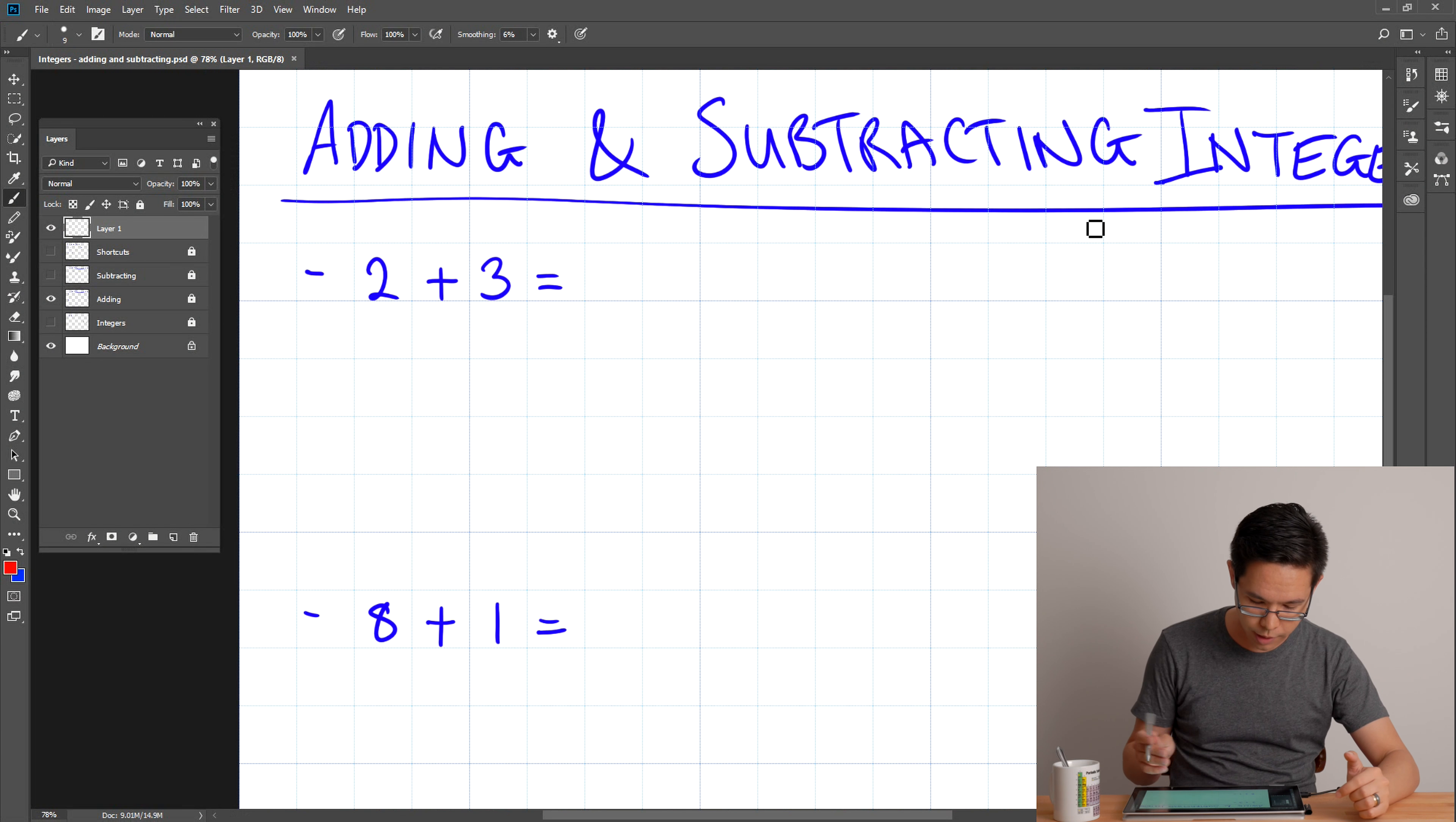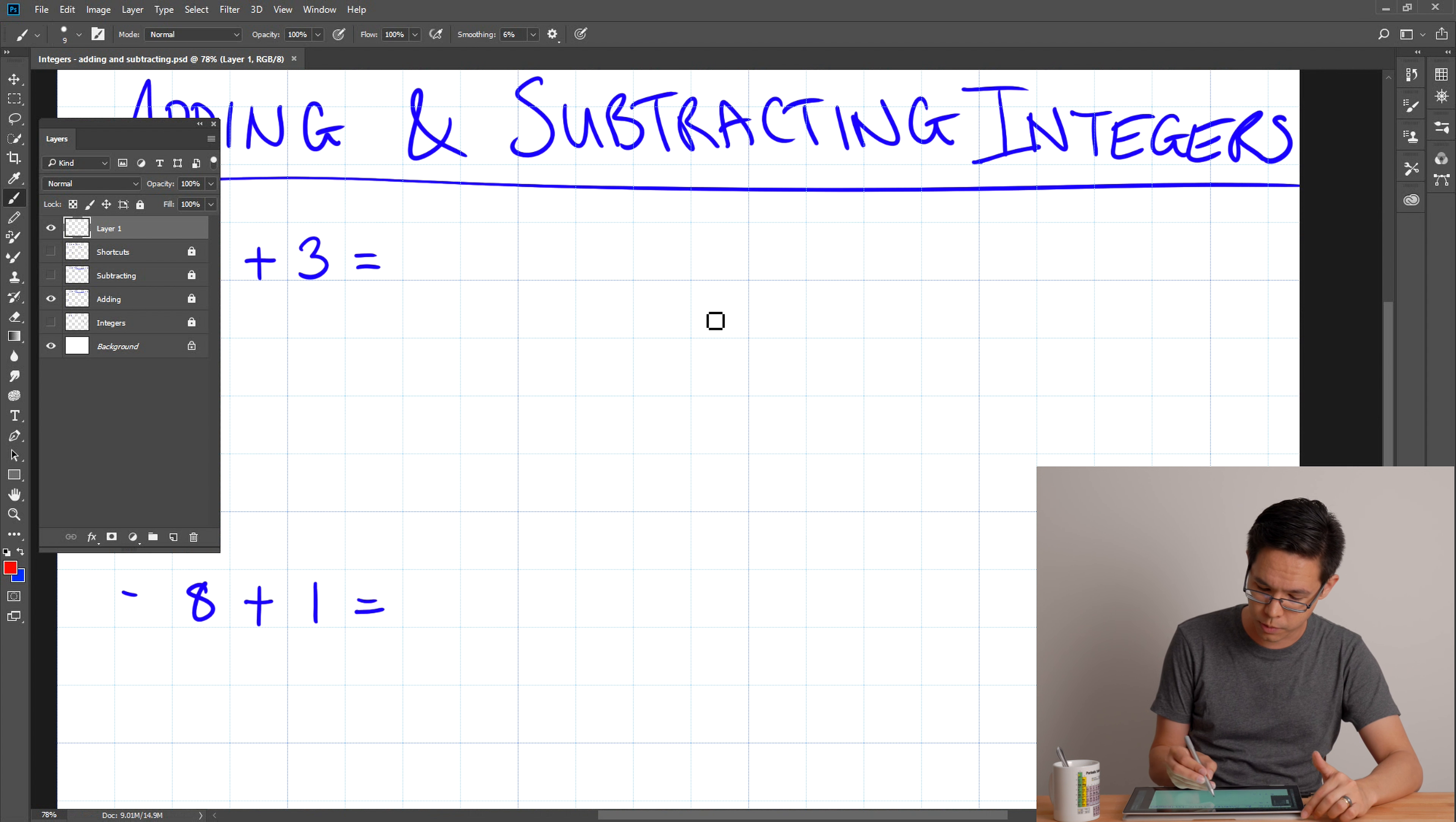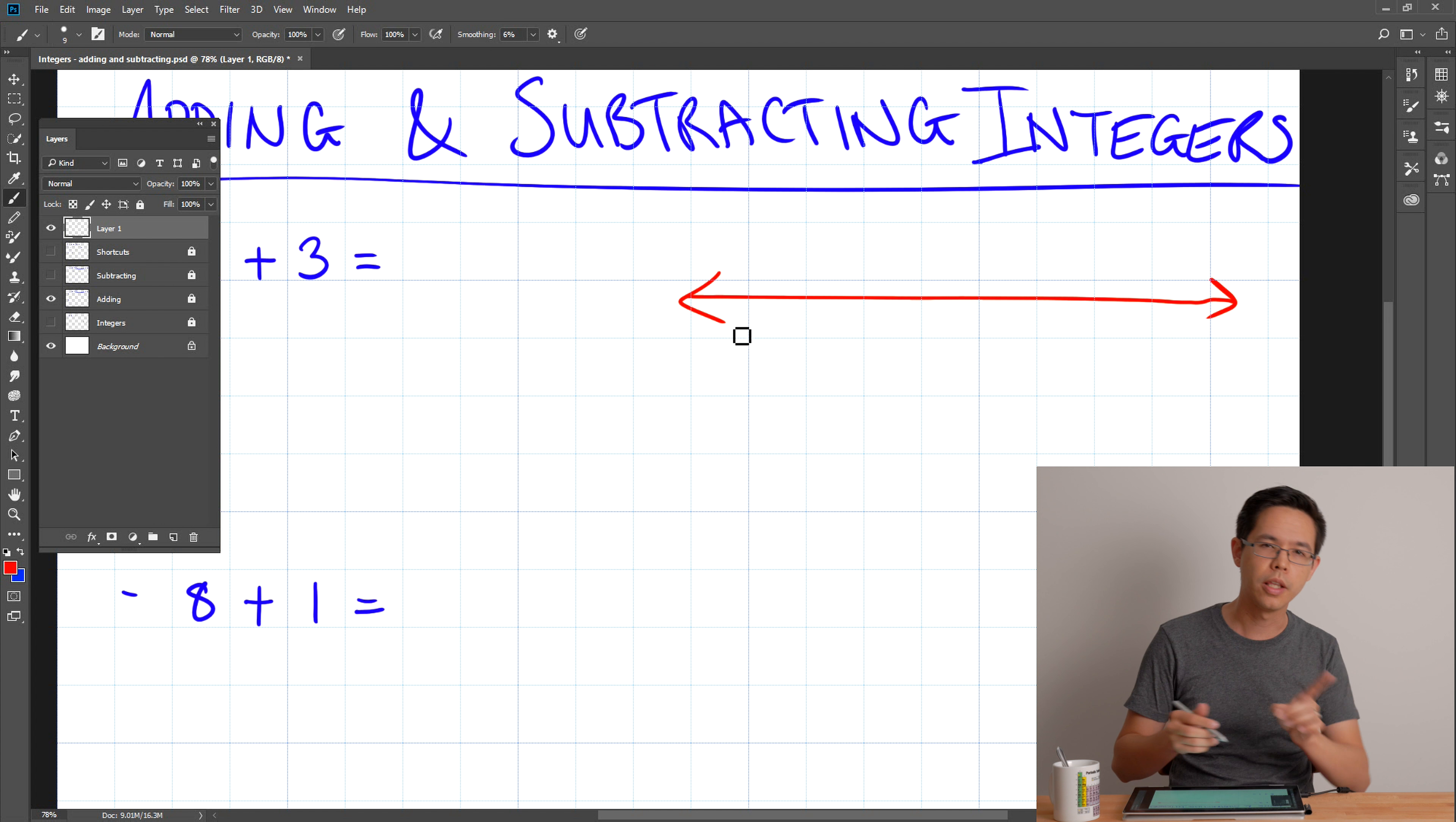So here I've got two problems here. I've got negative two plus three equals. Now a lot of you are probably just screaming at the computer, you know the answer. Hold on, because sometimes the answer is obvious, but sometimes it's not. So we need to develop our skill, what is a foolproof system that we can use to make sure that we figure out the answer every time. And one of the ways to solve this problem is to use the number line.